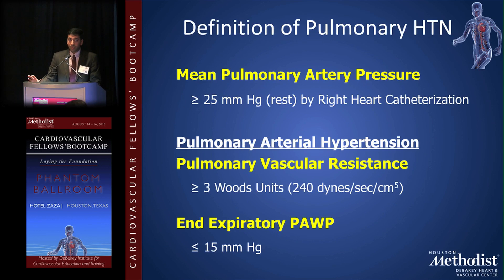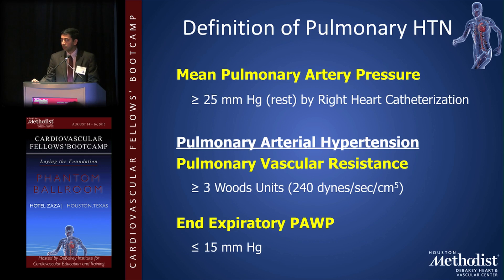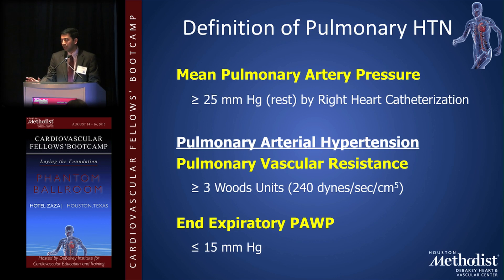One reason all cardiologists should know about pulmonary hypertension is that since the definitions changed in 2013, you really almost need a cardiologist to make a diagnosis of pulmonary arterial hypertension, because it requires a right heart cath — and it's really cardiologists who do right heart catheterizations in the cath lab.